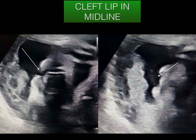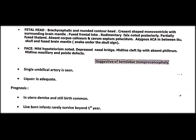Based on the imaging findings, the fetus was found to have a brachycephalic rounded contour head with a crescent-shaped monoventricle and surrounding brain mantle. There are fused frontal lobes, a rudimentary falx noted posteriorly, and partially fused thalami. There was no corpus callosum or cavum septum pellucidum, both completely absent. Only a single anterior cerebral artery was seen beneath the skull — the snake under the skull sign. The face showed a depressed nasal bridge and midline cleft lip with absent philtrum. There was also an associated single umbilical artery in this patient.